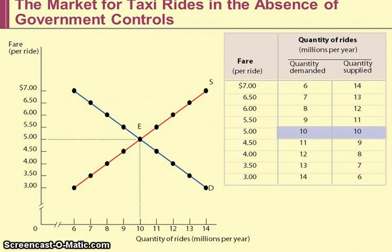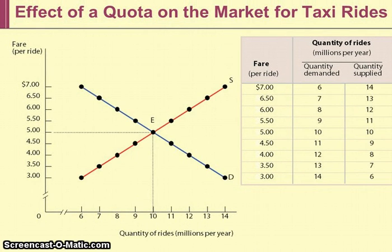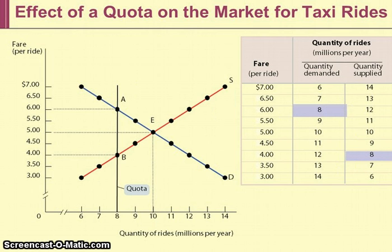The taxi medallion system creates a quota on the number of rides that can be given in a year. You have to have a medallion to operate a taxi in New York City, which puts a cap on how many rides can be given per year. We'll represent that in this graph by capping the number of rides per year at 8 million.